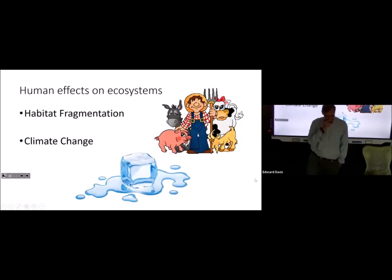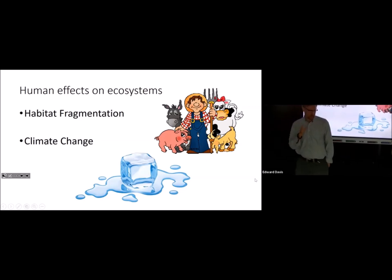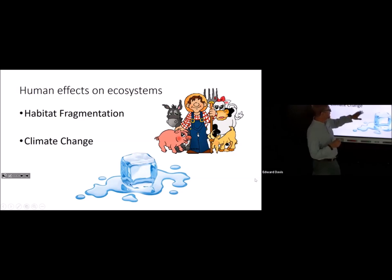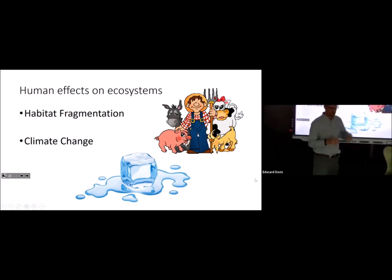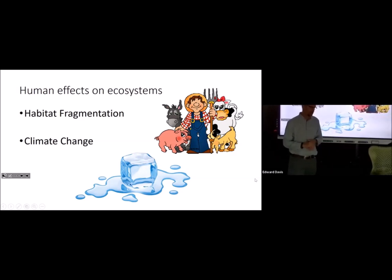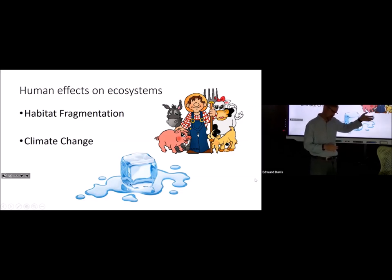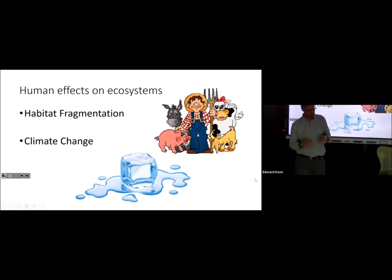When we think about human effects on ecosystems today, there are two main areas of concern. One is habitat fragmentation. As we take wild habitats and slice and dice them to make space for cultivation and food production for humans or other resource use, we might leave wild spaces, but they're cut up and not connected anymore.